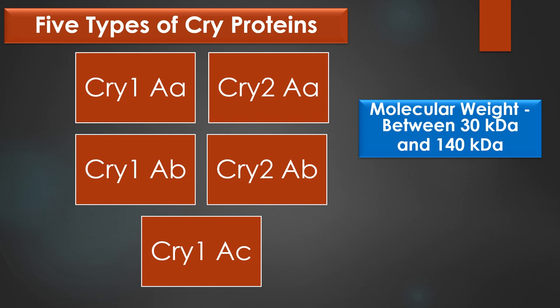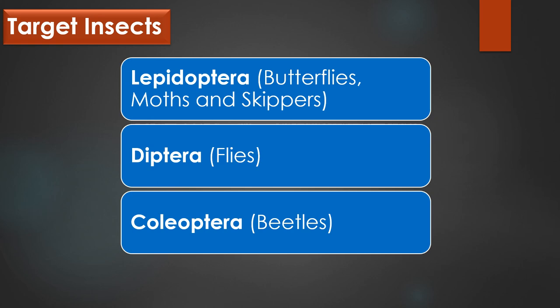Totally five types of CRY proteins are reported. They are CRY1AA, CRY2AA, CRY1AB, CRY2AB and CRY1AC. All these five types of CRY protein have a molecular weight between 30 kDa and 140 kDa, which are coded by CRY genes. The target insects of Bacillus thuringiensis are the Lepidopteran group of insects like butterflies, moths and skippers, Dipteran flies and Coleopteran beetles.